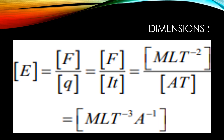Now, what about the dimensions? For the dimensions, we write the mathematical formula of the electric field intensity, then replace q by using the formula for current: current is equal to charge per unit time, so charge equals current multiplied by time. We write the dimensions of force and also the dimensions of current and time, and after solving we get the dimensions of the electric field intensity.